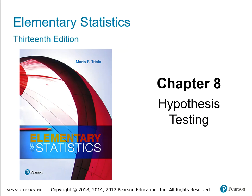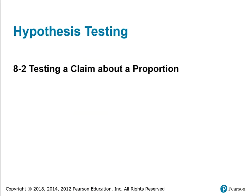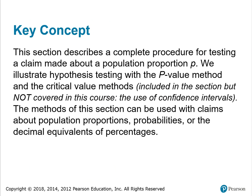Chapter 8, Hypothesis Testing 8.2: Testing a Claim About a Proportion. This section describes a complete procedure for testing a claim about a population proportion P. We illustrate hypothesis testing with the P-value method and the critical value methods.